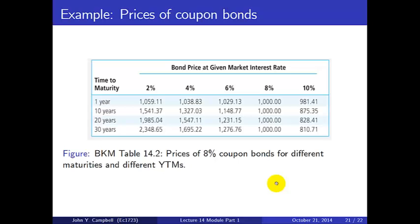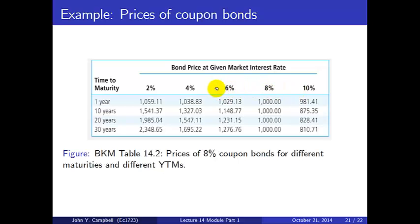Here's an example from Bodie, Kane and Marcus showing prices of 8% coupon bonds for different maturities and yields. If the market interest rate is 8% and the coupon is 8%, the price is $1,000 regardless of maturity — the special case C equals Y. If the market interest rate is above 8%, you get discounts that grow larger with longer maturities. If the market interest rate is below 8%, you get premiums that increase with longer maturities.